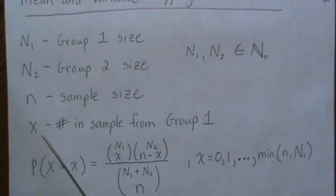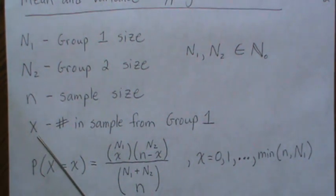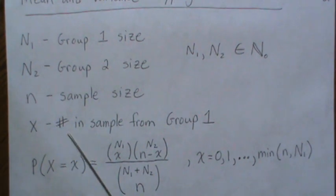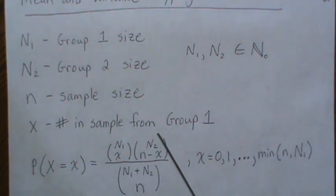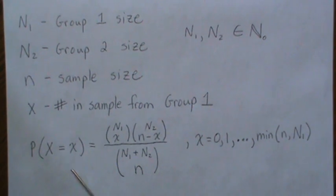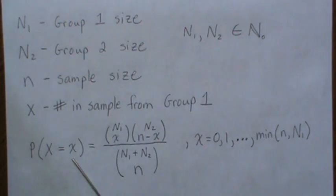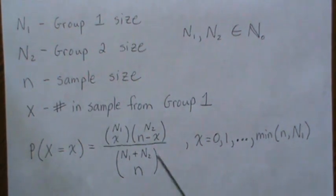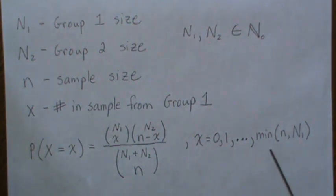So these are in the natural numbers. The X is the random variable, and it's the number in our sample from group 1. So the probability that we observe little x is this formula here. And X can go from 0 to whatever the minimum of N and N1 is.